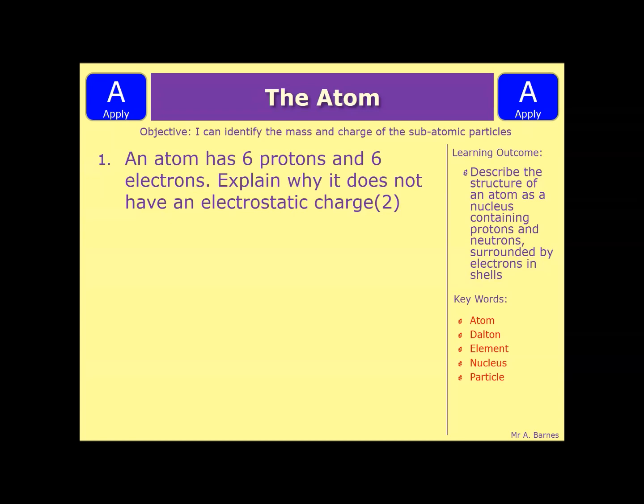Okay, let's have a look at a quick question then. So this one is, an atom has six protons and six electrons. Explain why it does not have an electrostatic charge.